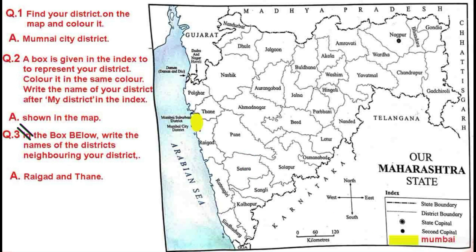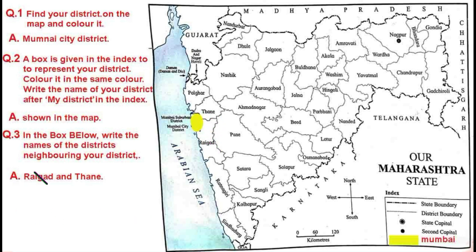For question three, write the names of the districts neighboring your district. Our district is Mumbai, so we write Thane and Raigad as they are close neighbors. Thane and Raigad are the two neighboring districts. I hope you understand the Maharashtra State map.